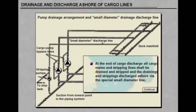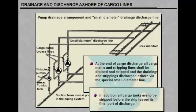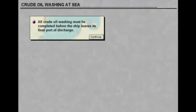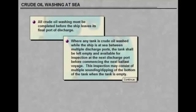At the end of cargo discharge, all cargo mains and stripping lines shall be drained and stripped, and the drainings and strippings discharged ashore via the special small diameter line. In addition, all cargo tanks are to be stripped before the ship leaves its final port of discharge. All crude oil washing must be completed before the ship leaves its final port of discharge. Where any tank is crude oil washed while the ship is at sea between multiple discharge ports, the tank should be left empty and available for inspection at the next discharge port before commencing the next ballast voyage.